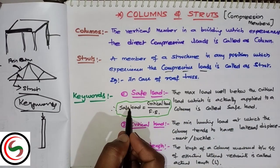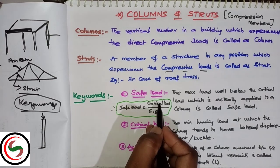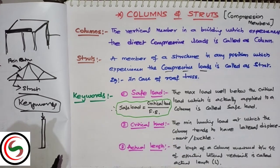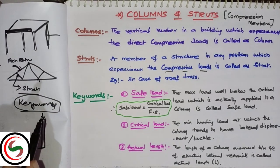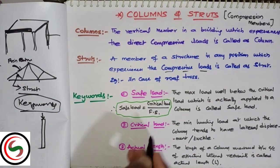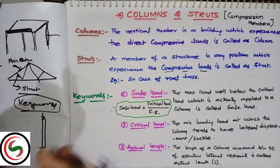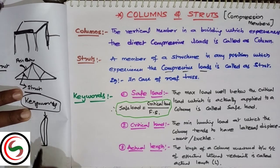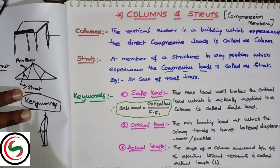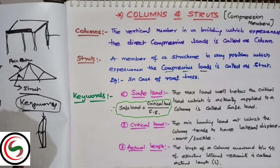So safe load can be taken as critical load by factor of safety. Generally, the factor of safety will always be greater than one. Next, the critical load is the load at which the column tends to buckle.